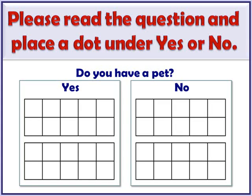Another way to build in real-world situations and math practice standards is a daily yes-or-no question. Students can graph or post their responses using sticky dots or Velcro circle chips — for example, do you have a pet? This also builds in place value because the yeses might total 11, 12, 13, or 14, allowing you to build the concept of ten plus some more.